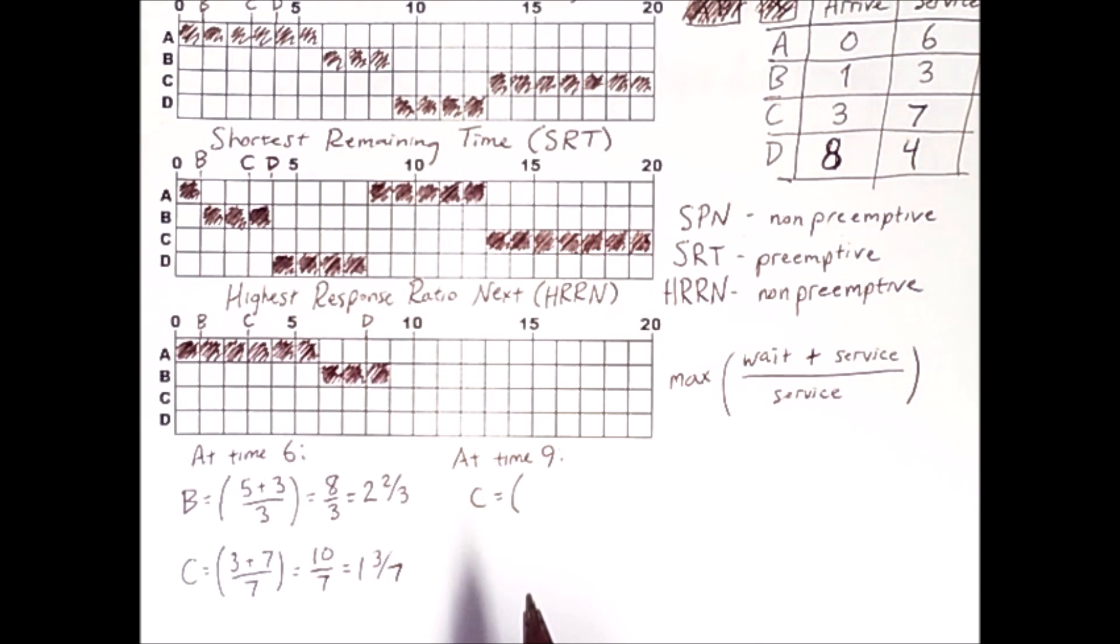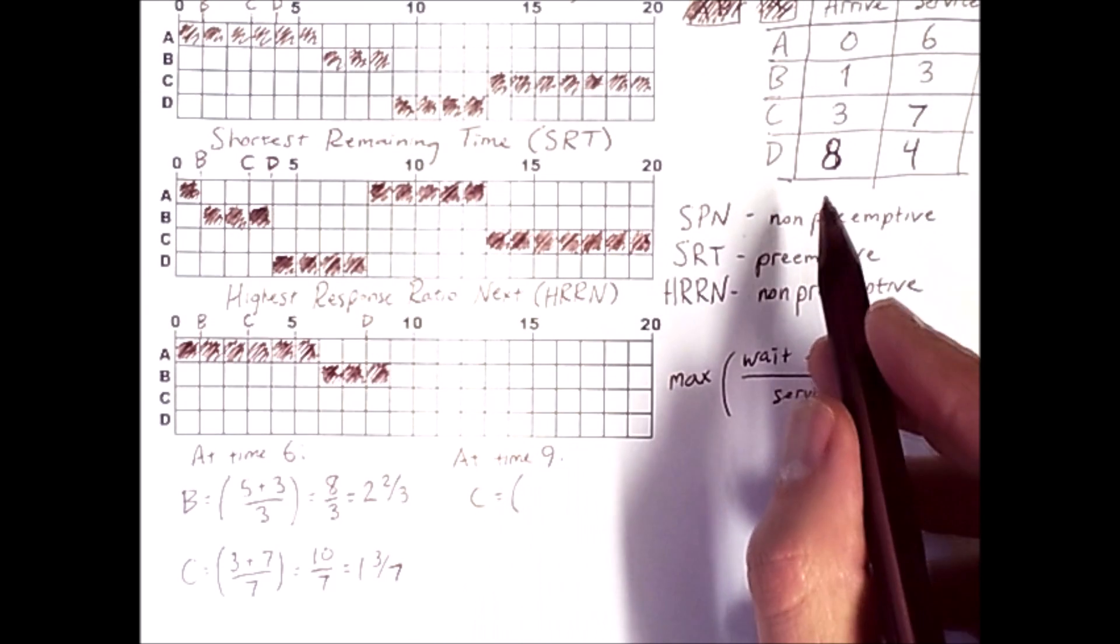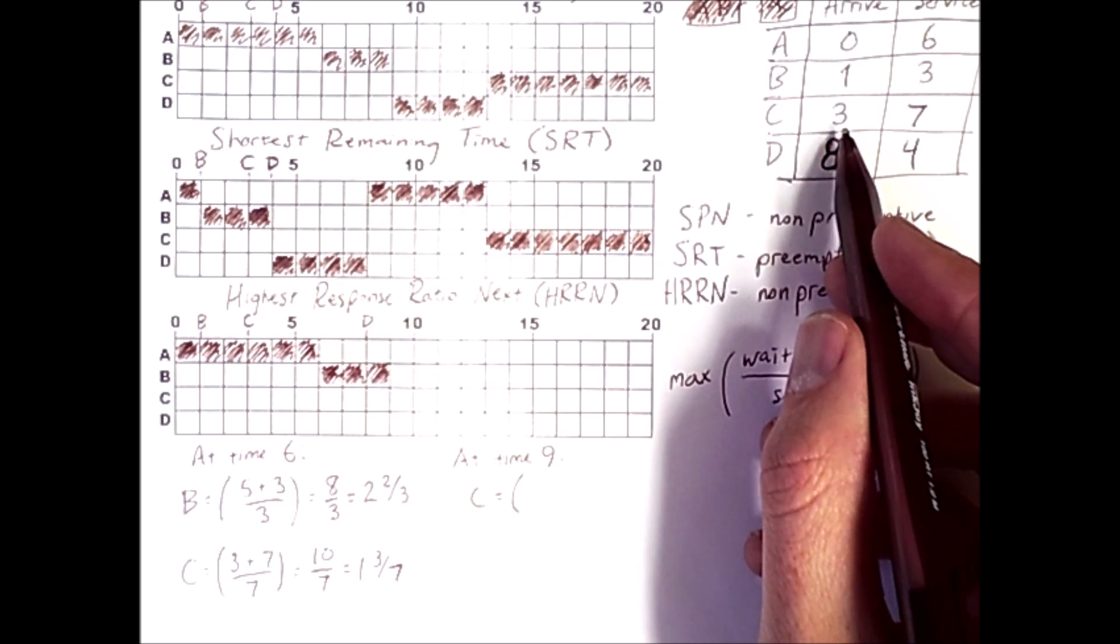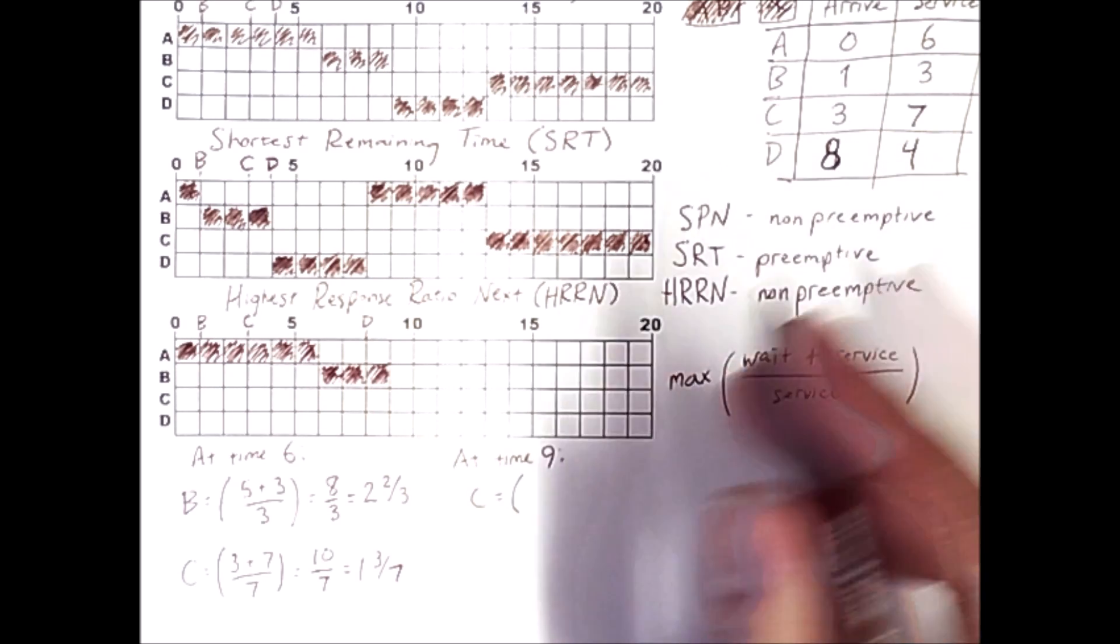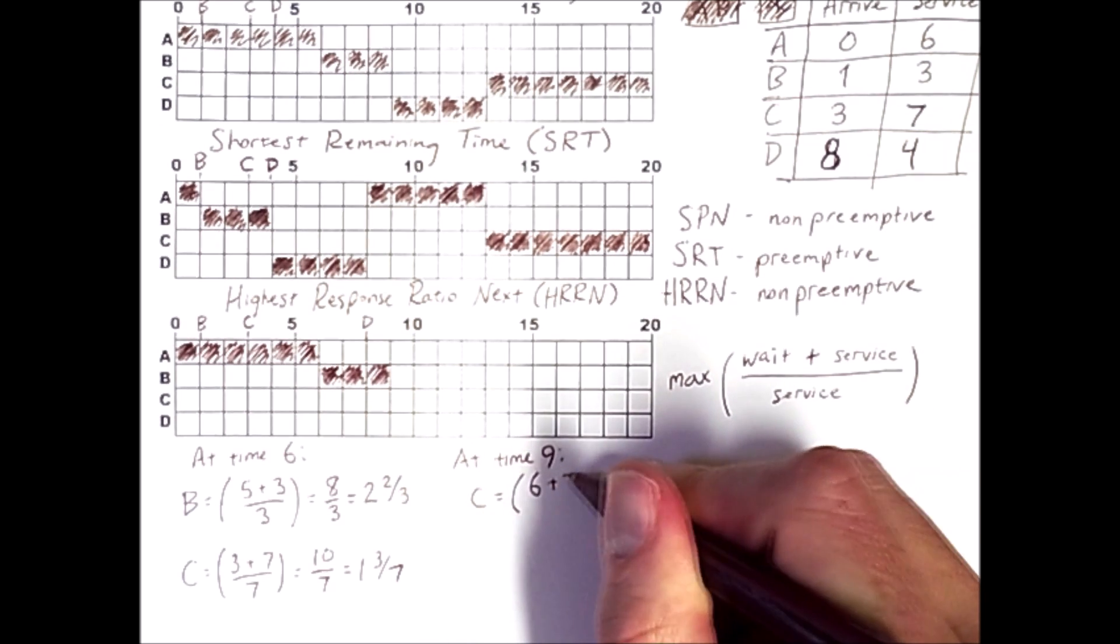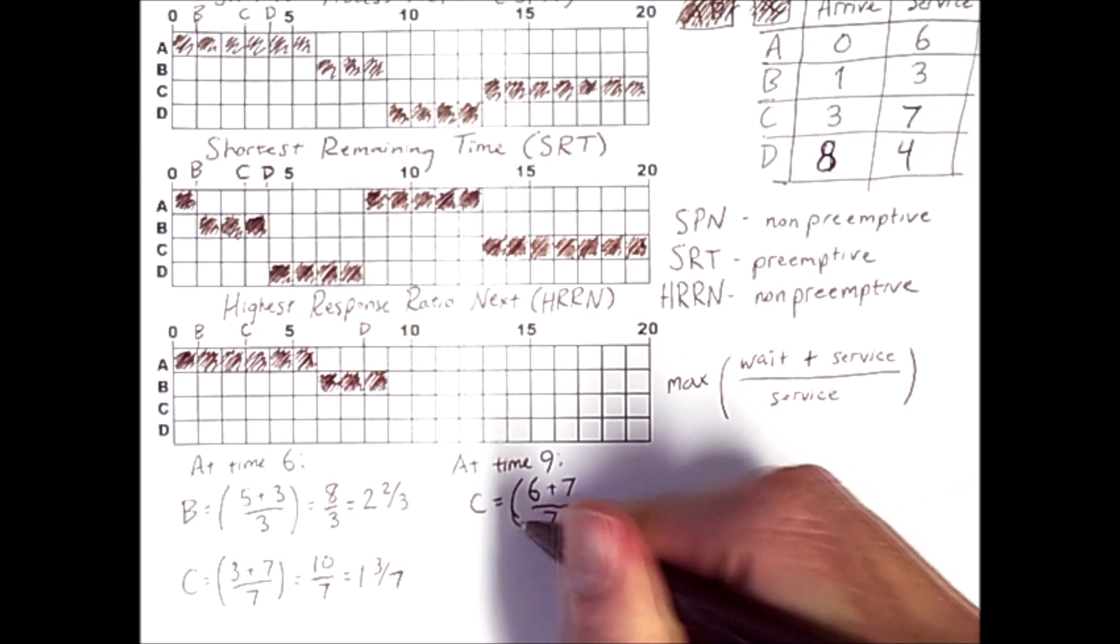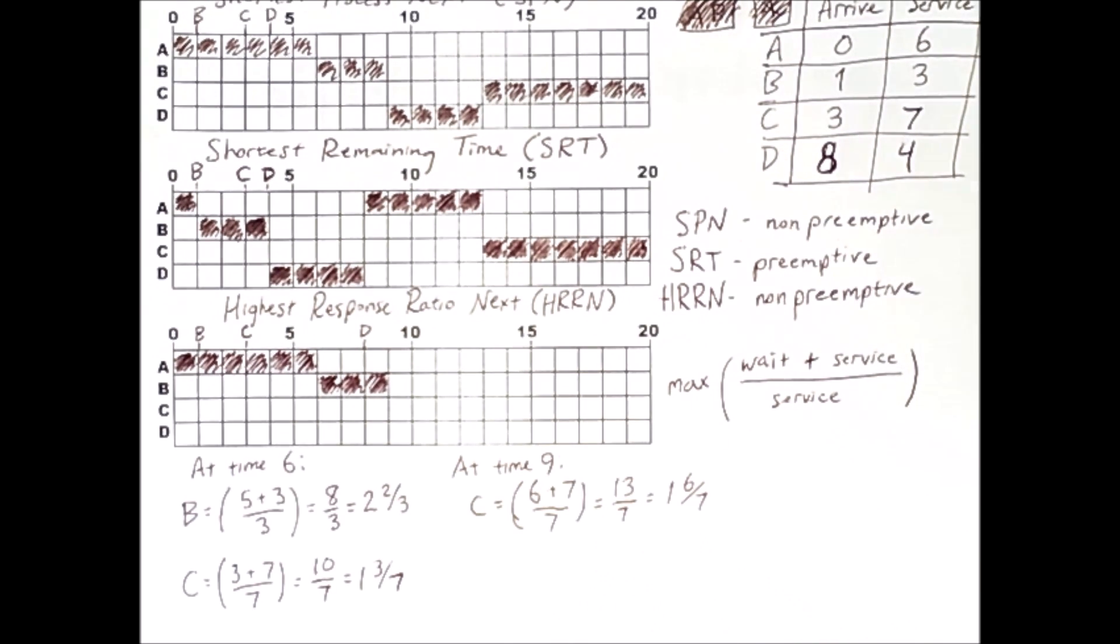By time 9, process C has been waiting for 6 time units. 9 minus 3 is 6 plus the service time divided by the service time, which equals 1 and 6 sevenths.